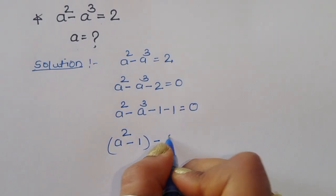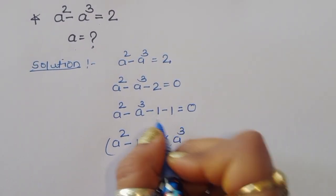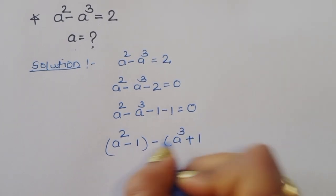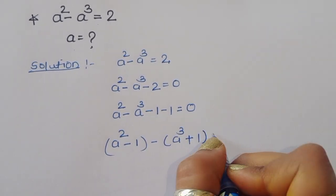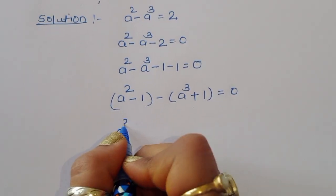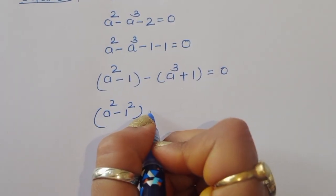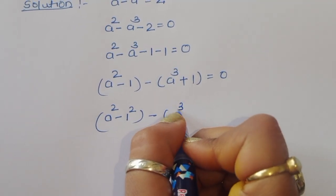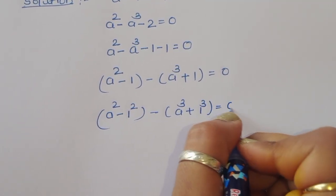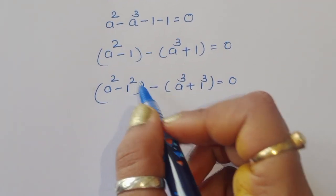Rearranging the signs: a squared minus 1 squared, minus a cubed plus 1 cubed, equals 0. Now a squared minus 1 squared is in the form of a squared minus b squared, and minus a cubed plus 1 cubed is in the form of a cube plus b cube.